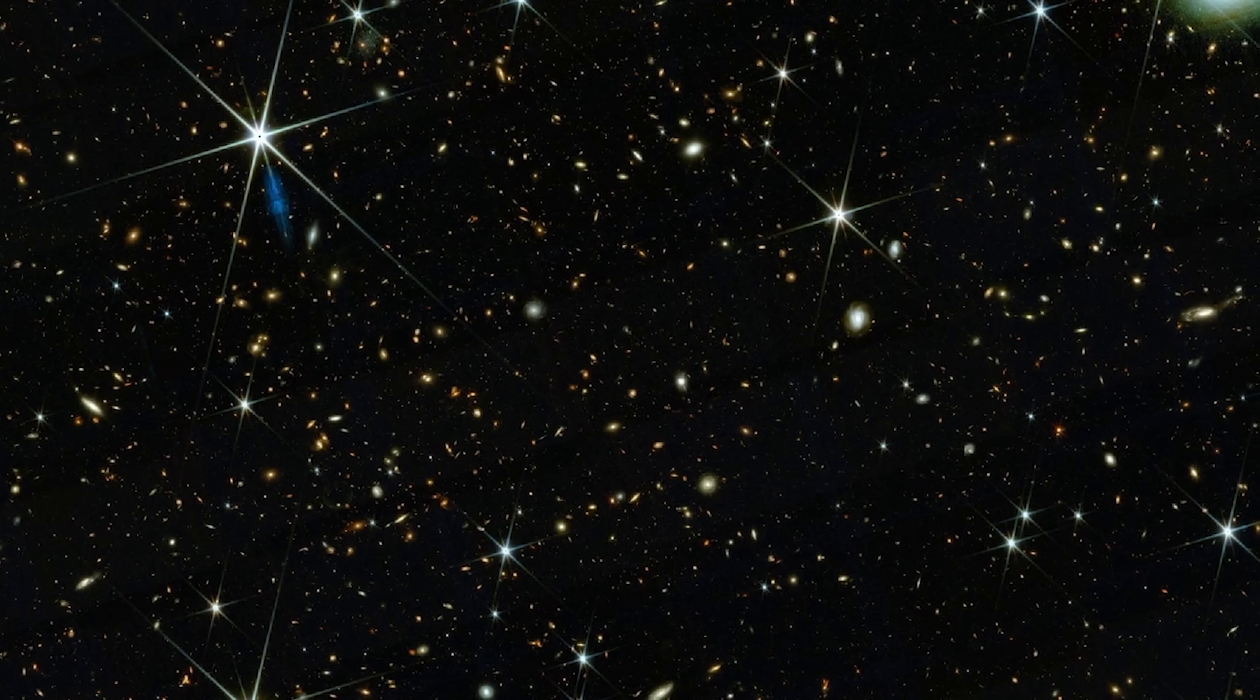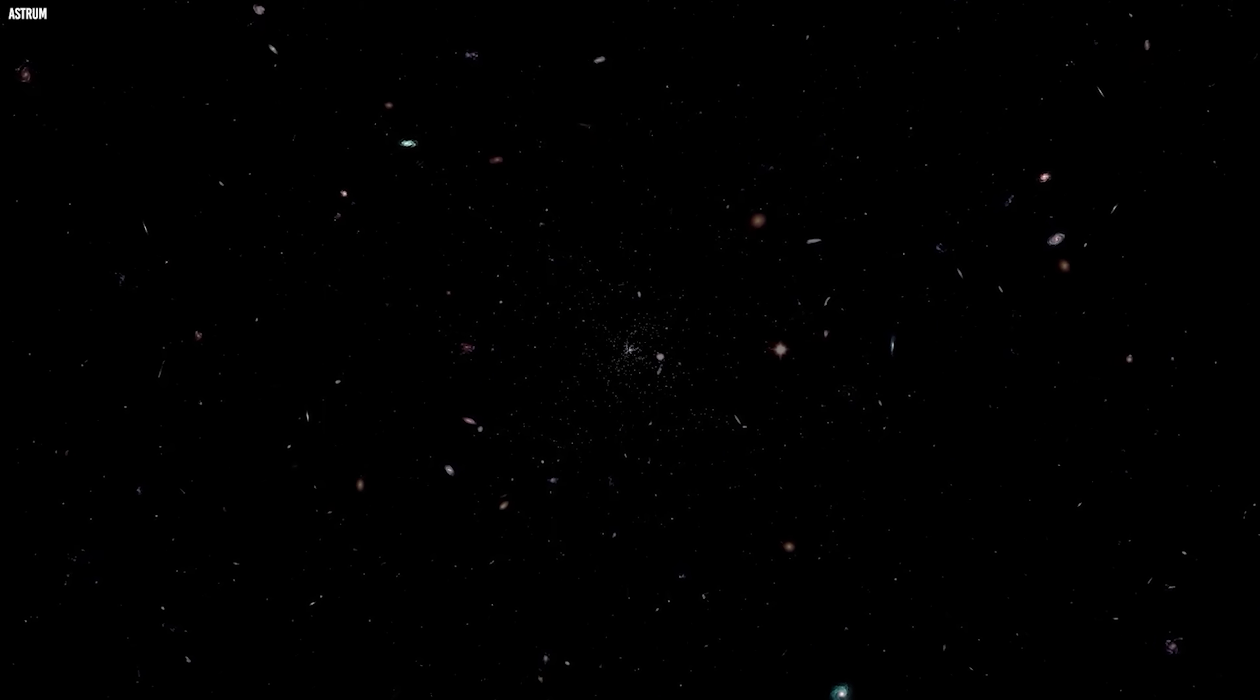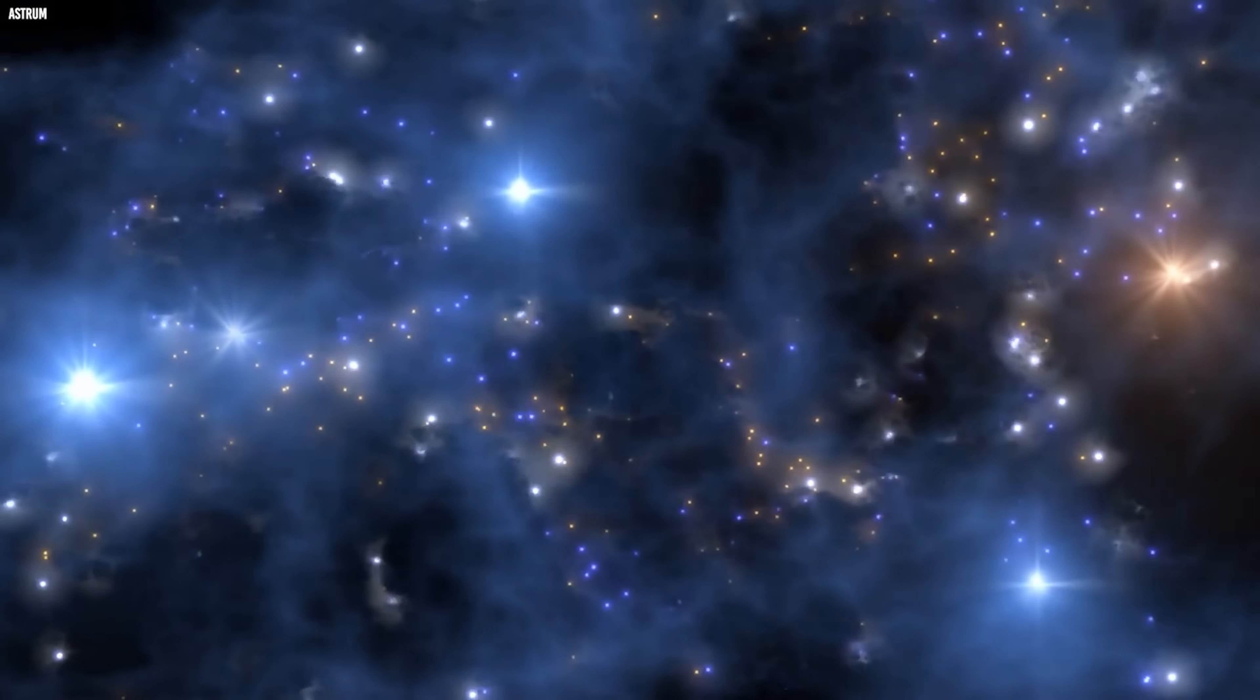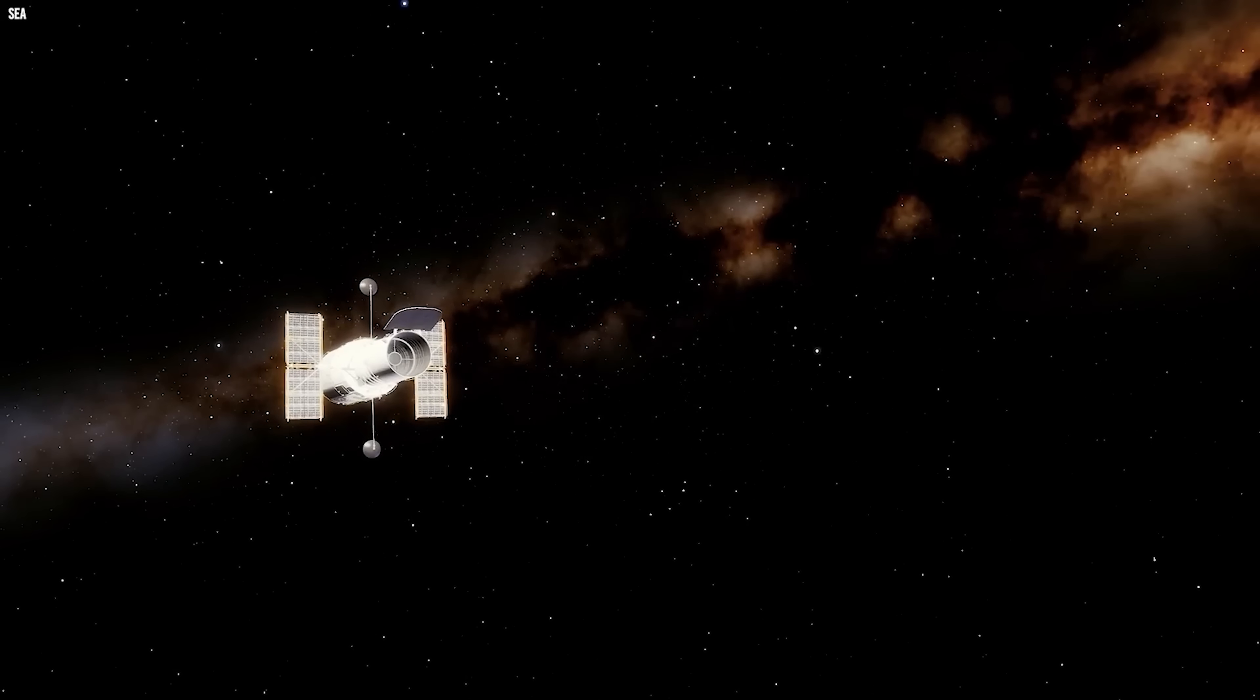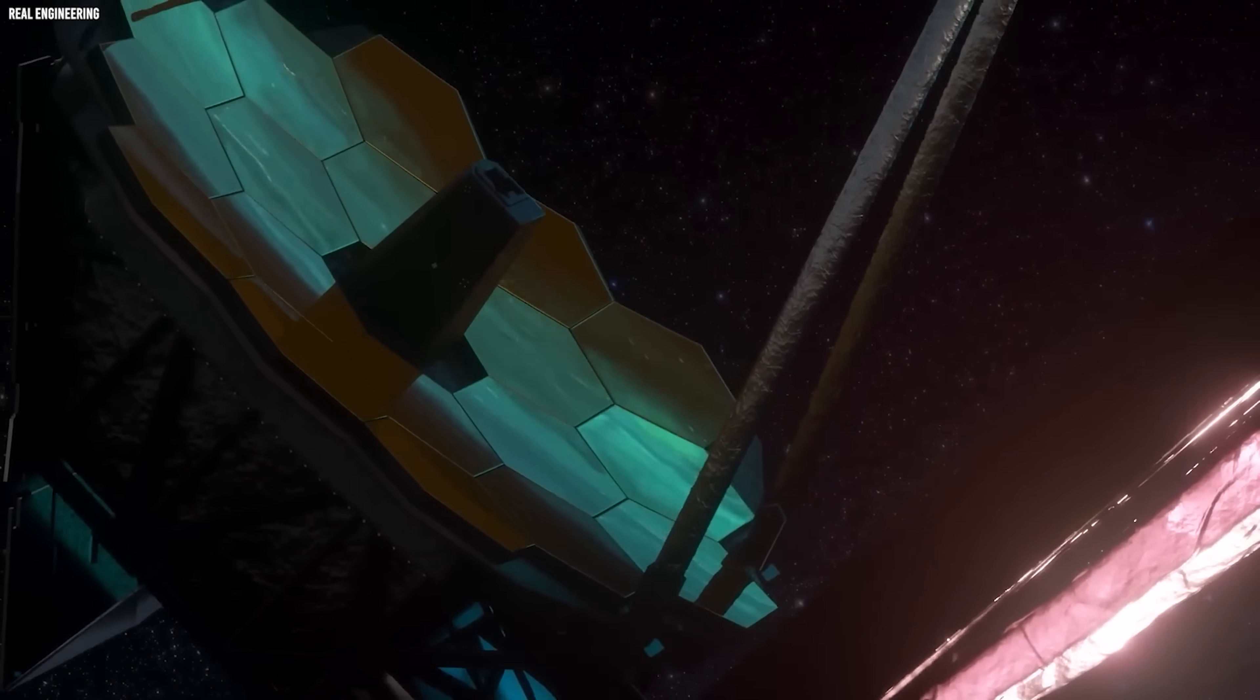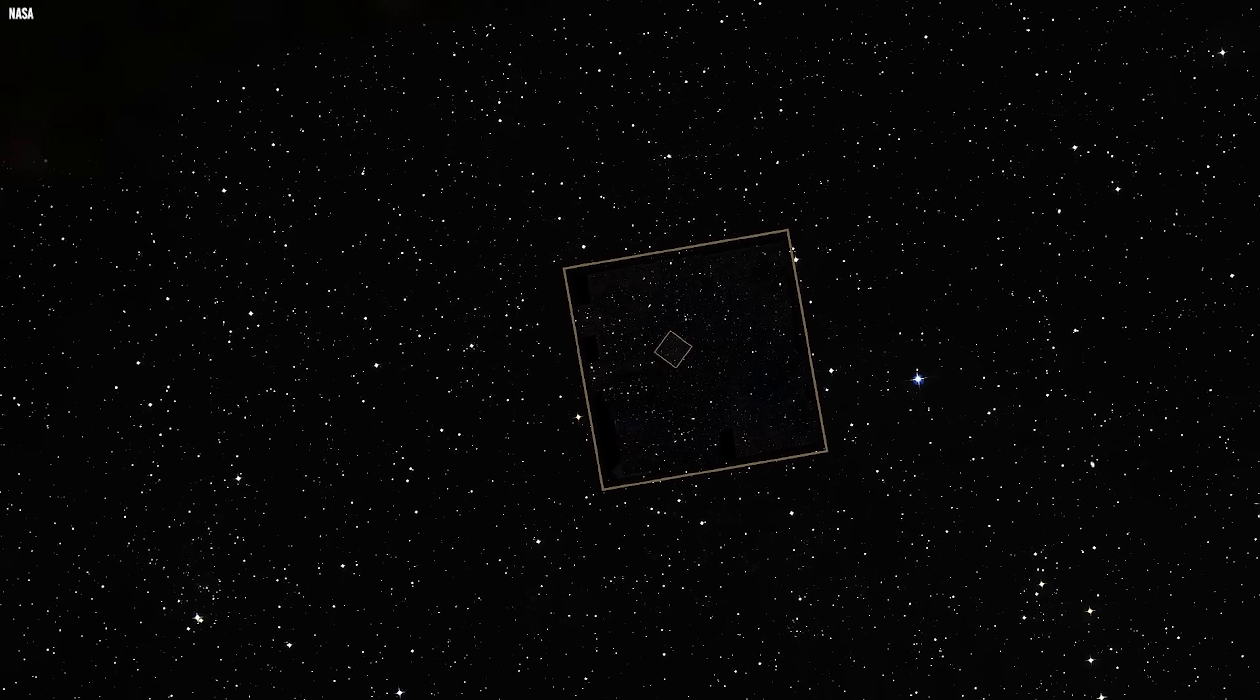Within this single image lies a continuous timeline of cosmic history, stretching from just a few hundred million years after the Big Bang all the way to the present. This isn't about seeing more of what we already knew. It's about revealing what was once hidden. Where Hubble showed us a crowded city block, Webb now unveils the entire metropolitan sprawl. The suburbs, the highways, and the vast open spaces that form the cosmic web itself.